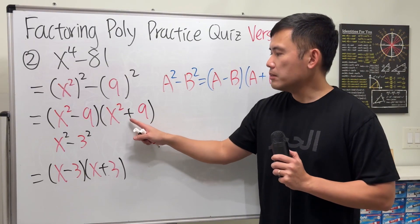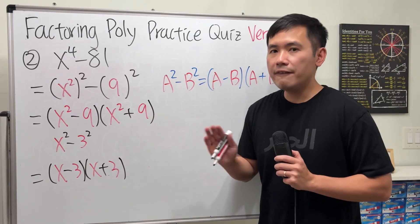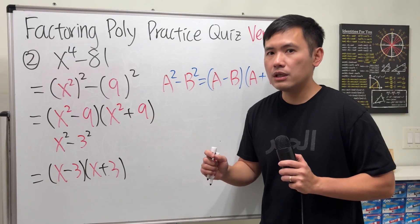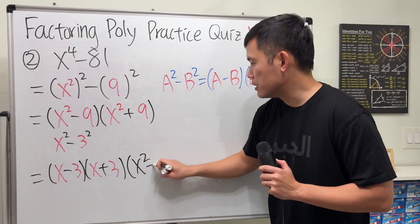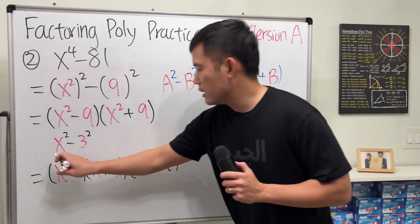Well, x squared plus 9, a sum of two squares, it's not factorable with real numbers. So if you're just dealing with real numbers, you can just keep it, and we are just going to keep it for this video, for this quiz, that's it.